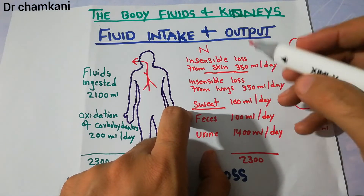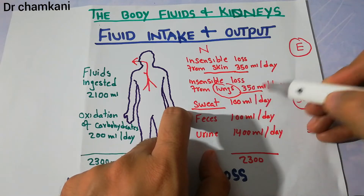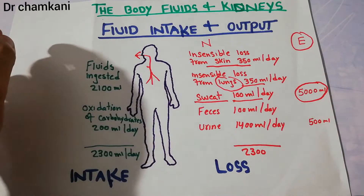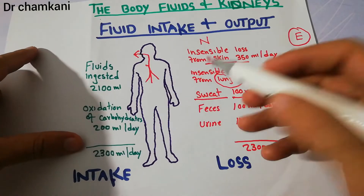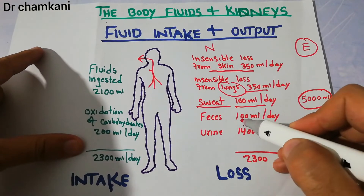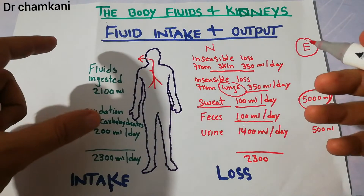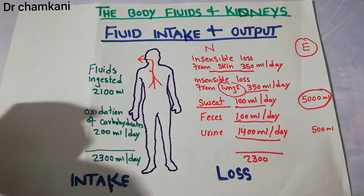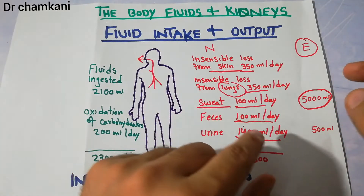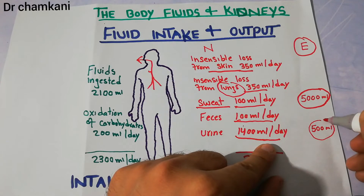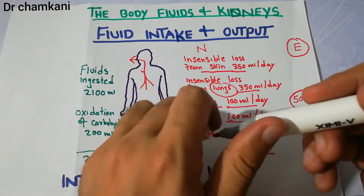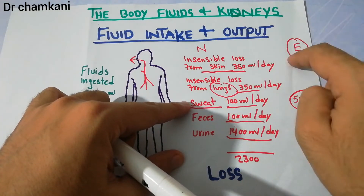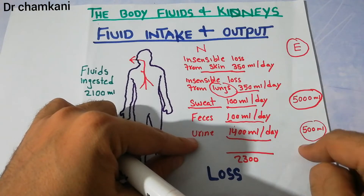The insensible loss from skin is 350 ml, insensible loss from lungs is also around 350 ml, and fluid lost through sweat is normally 100 ml but in severe exertion may be as high as 5 liters. The fluid lost in feces is around 100 ml per day. The largest amount of fluid is normally lost in urine, which is around 1400 ml per day. In exercise or exertion, urine output may decrease to as low as 500 ml per day or even lower, while fluid loss through sweating increases.